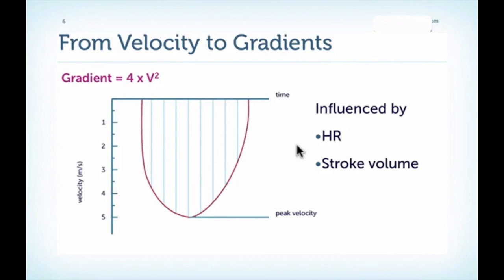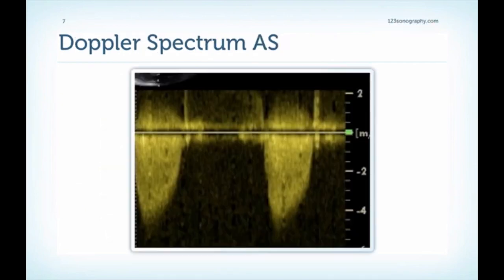From the peak velocity at the aortic valve using Doppler echo, we can easily determine the maximum gradient over the valve by using the Bernoulli equation: four times the velocity squared. The echo machines will calculate this automatically, but it is important to know that the velocity is influenced by heart rate and importantly by stroke volume. If you have low cardiac output, you will find low velocity and also low gradients.